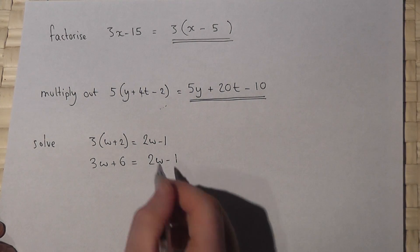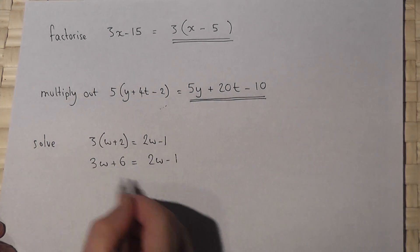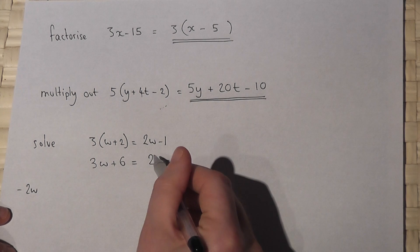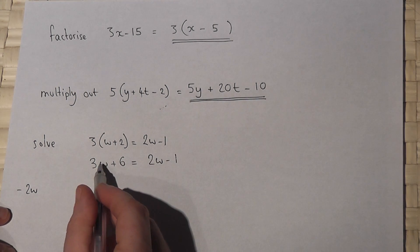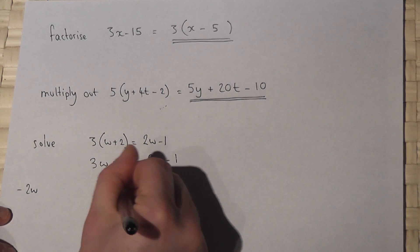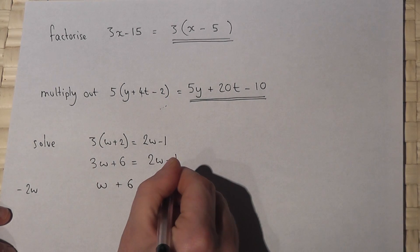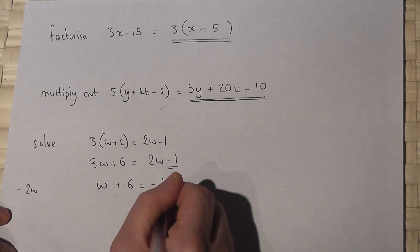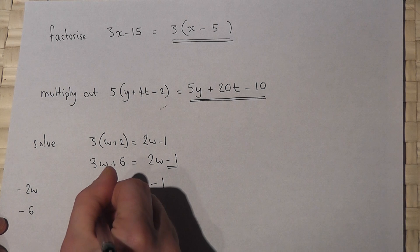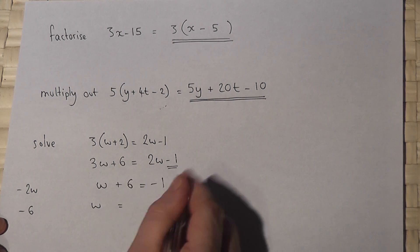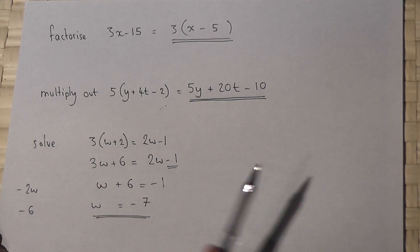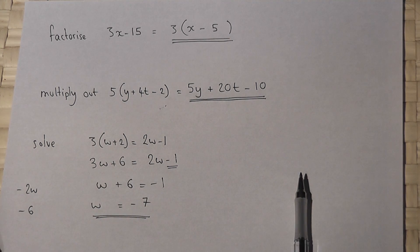I now need to get my w terms to one particular side. I'll choose the left-hand side. So if I take away 2w, this will cancel out, and 3w take away 2w is just 1w or w. So w plus 6 equals minus 1. If I take away 6, w equals minus 1 take away 6. So the solution to the equation is w equals minus 7.